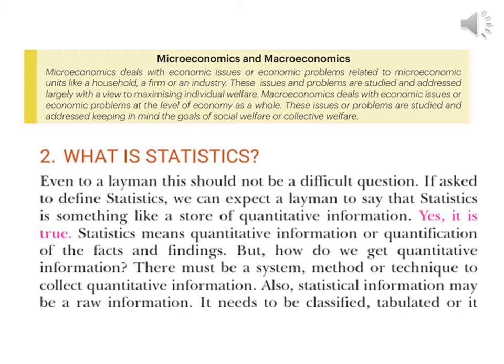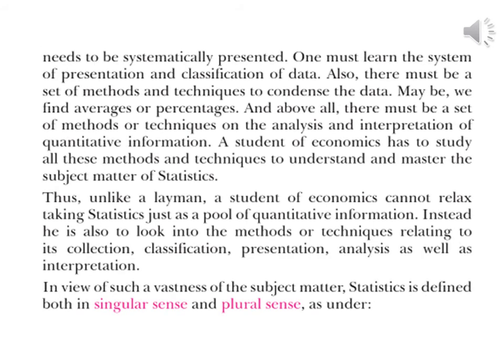Statistics involves quantitative and quantification of facts and findings, and it normally deals with quantitative information. There must be a systematic method or technique to collect quantitative information. Statistical information may be raw information that needs to be clarified, tabulated, and systematically presented. One must learn the system of presentation and classification of data. There must also be methods and techniques to condense the data, such as finding averages or percentages.